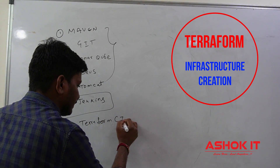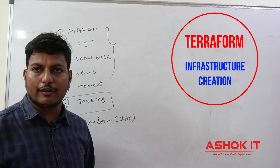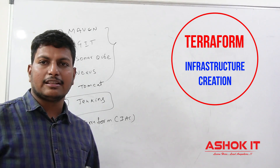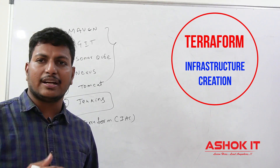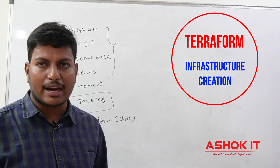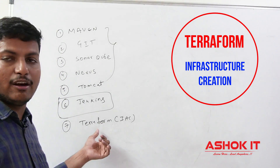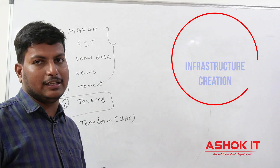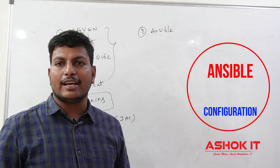The next one we are going to use is Terraform. Terraform is called as infrastructure as code. Whatever infrastructure we need for our project — the machines that are required, the storage services that are required, the databases that are required — instead of creating that infrastructure manually, we can automate the infrastructure creation by using Terraform. Terraform supports almost all cloud platforms available in the market.